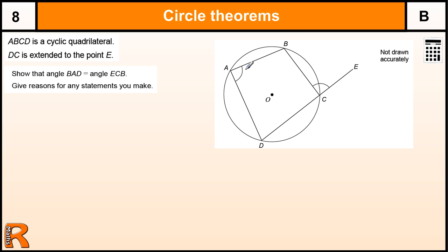Now we're told we've got to try and show this angle here, angle BAD, is equal to angle ECB, which is this angle here. And this is going to be all based around this angle here, BCD, which I'm going to call C.